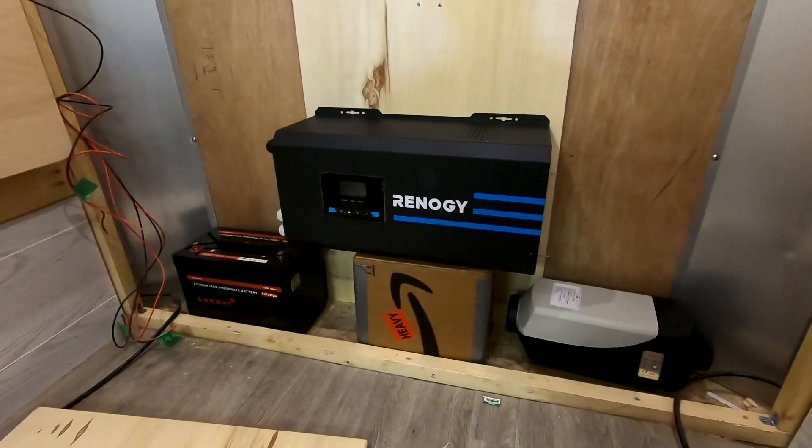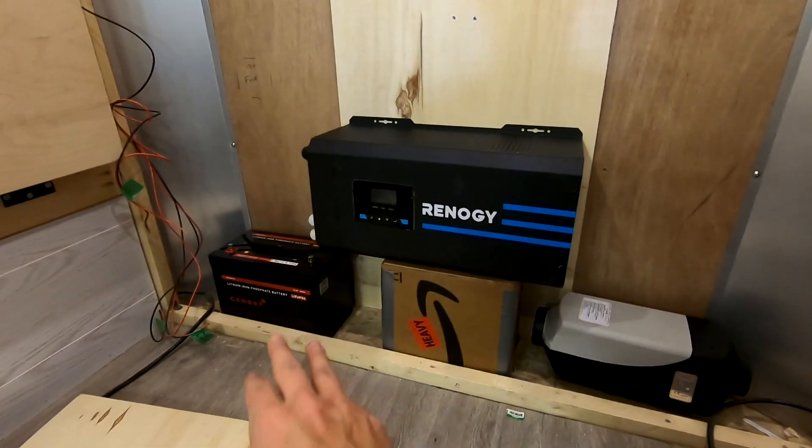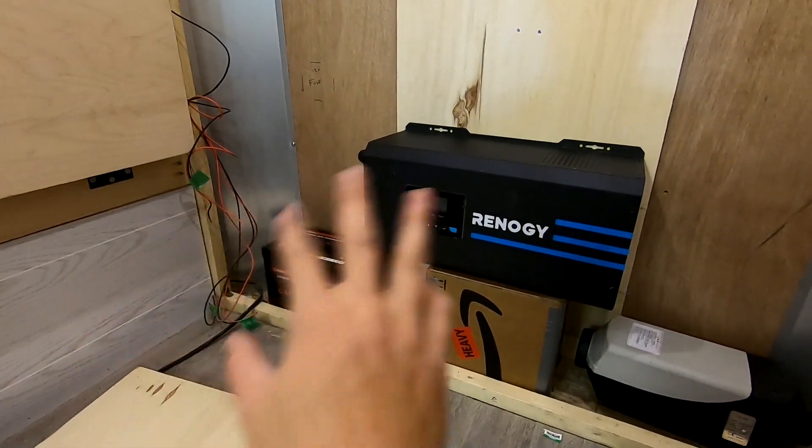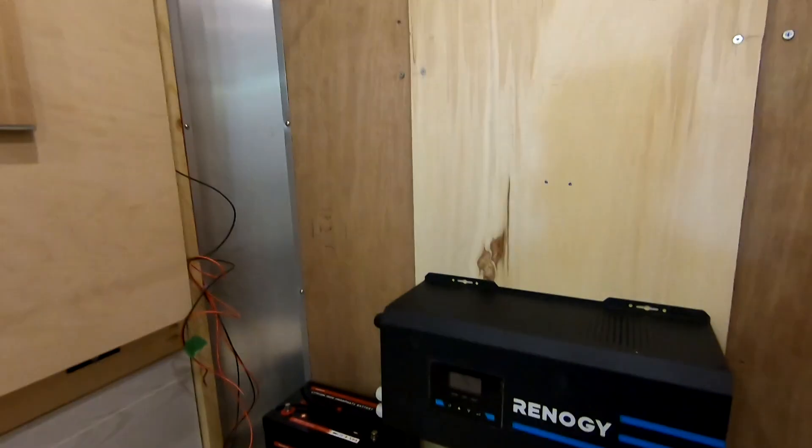So this is roughly the layout of how it's going to work. Battery, inverter, heater, charge controller, fuse block, and all the cables to accompany it.